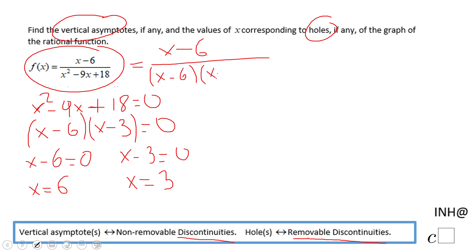And what do you notice now? That x minus 6 and x minus 6 cancel out. So the simplest form of this rational function is 1 over x minus 3.